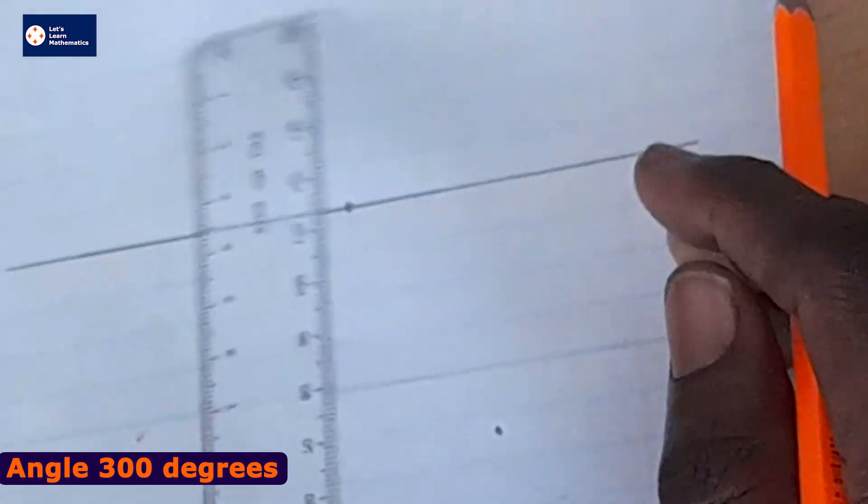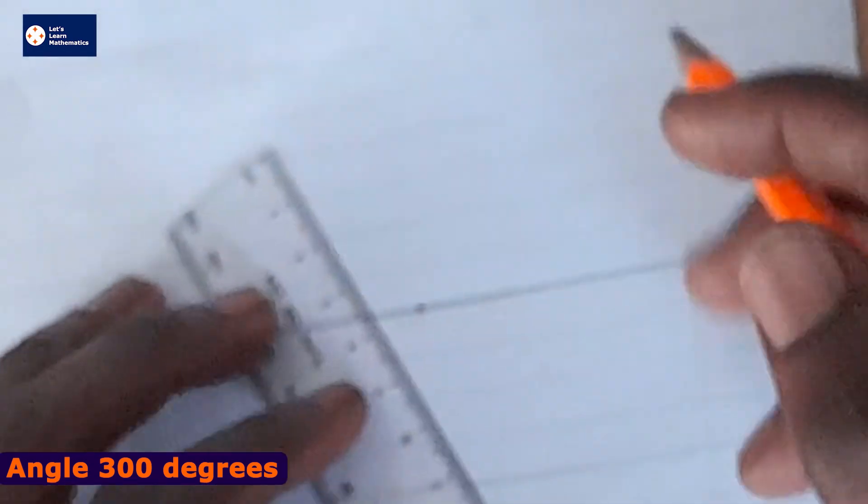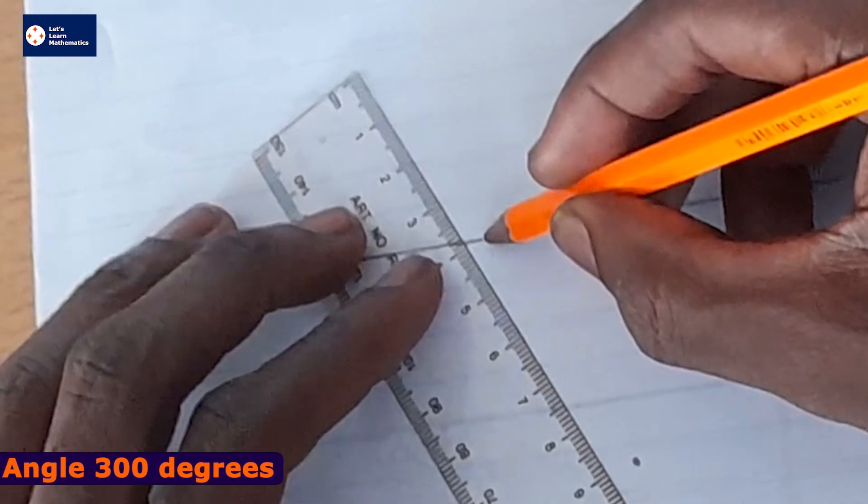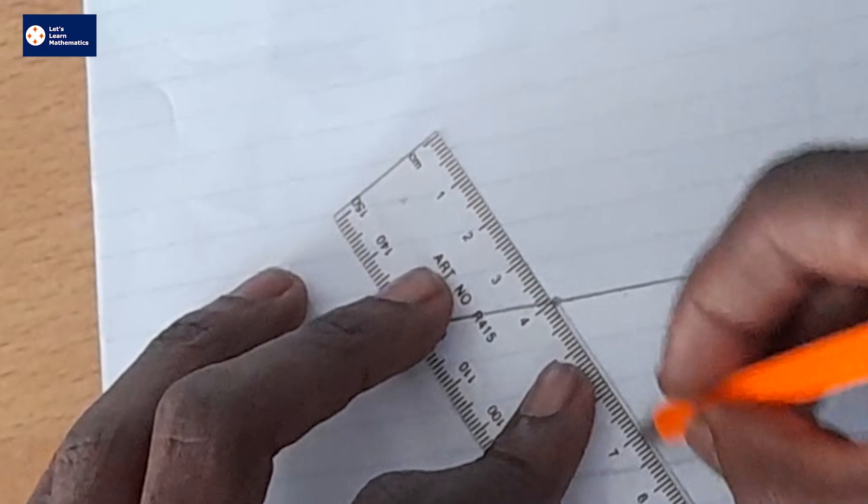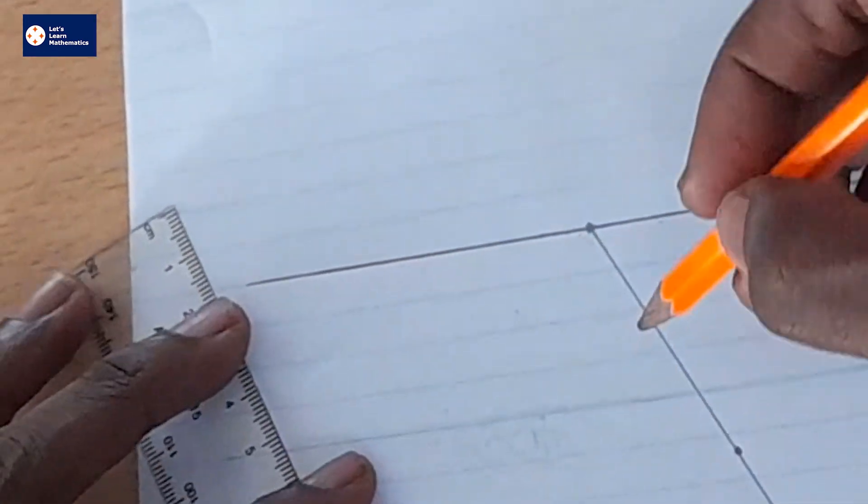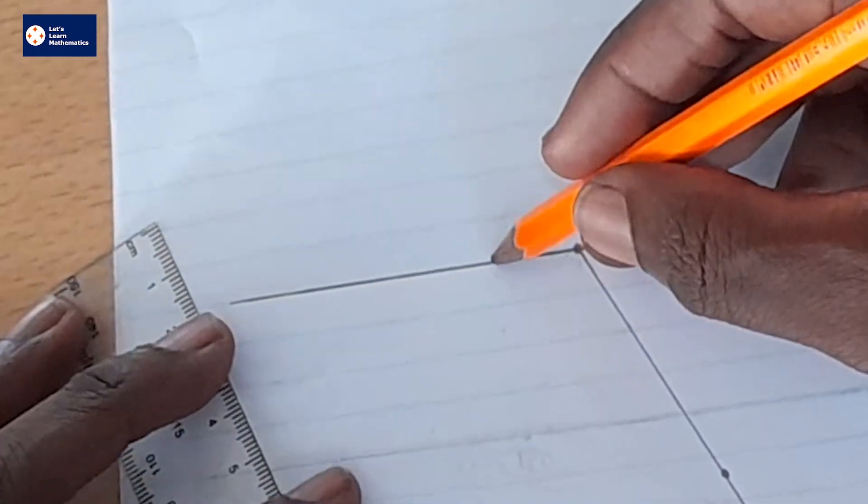So let me draw the line through the two points. This means that the angle from here to here is 120.